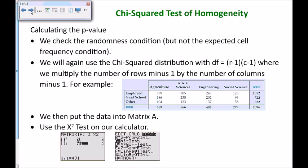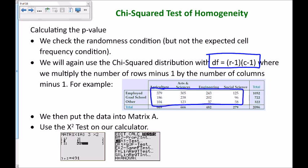When we calculate the p-value, we check the randomness condition. We will use the chi-square distribution with the same properties as before. The degrees of freedom will be rows minus one times columns minus one. For example, with three rows and four columns — not including the marginal distributions — that's two times three, or six degrees of freedom.